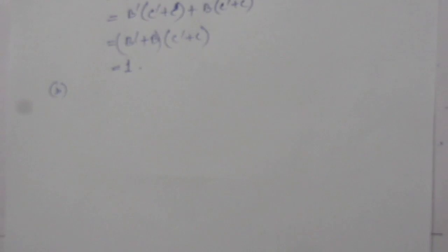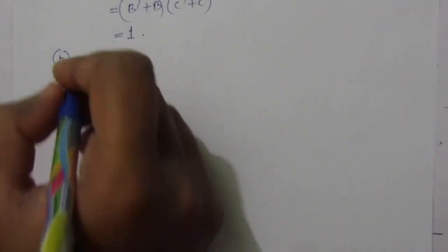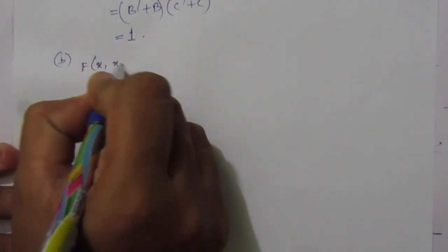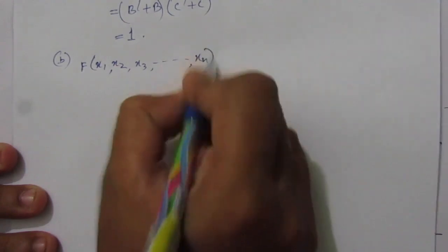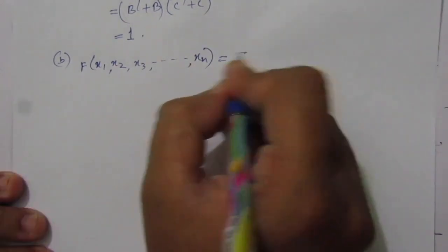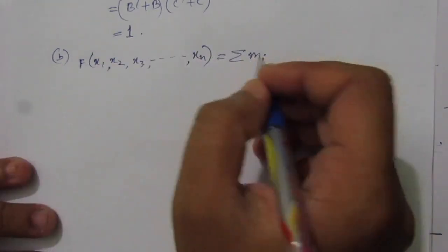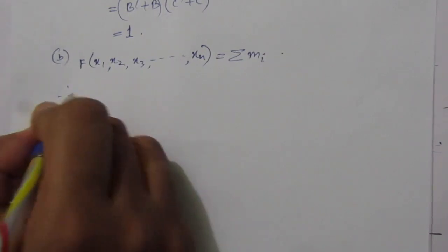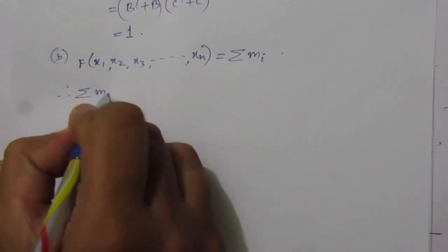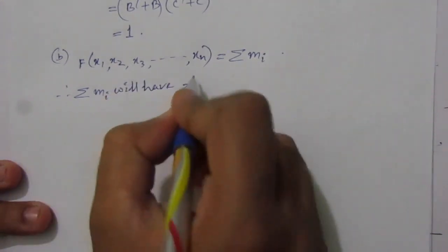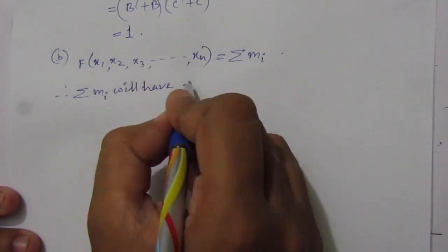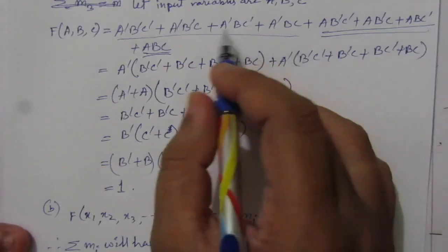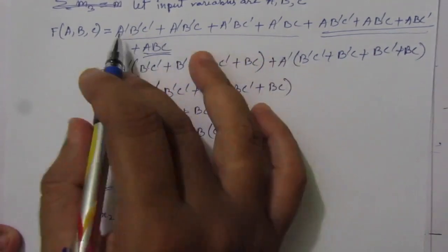Now we have to write the procedure — how we have found this. We have n number of terms, so we can write it as f(x1, x2, ..., xn) because we have n input variables. The sum of m_i will have 2^n number of terms.